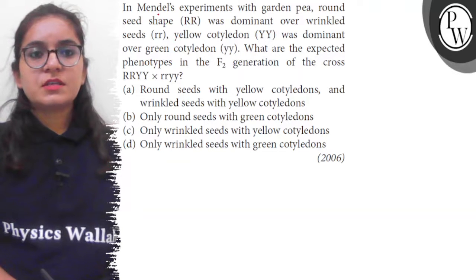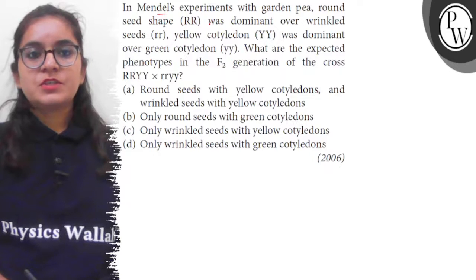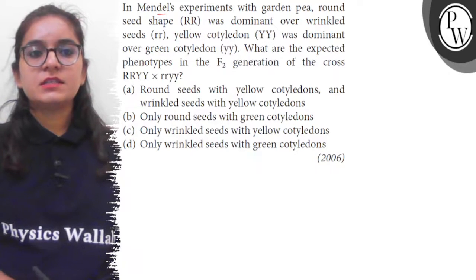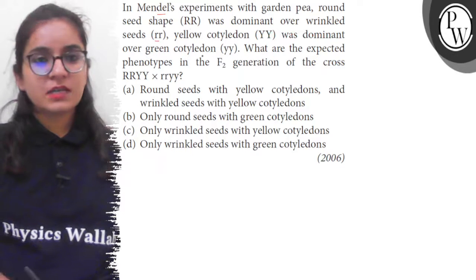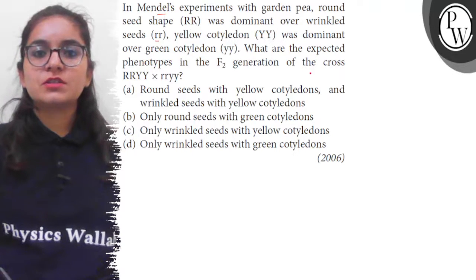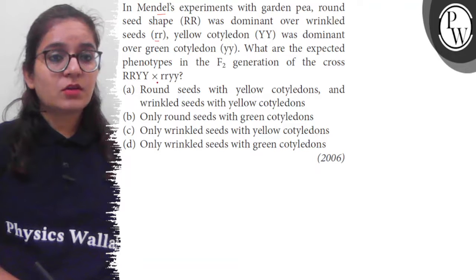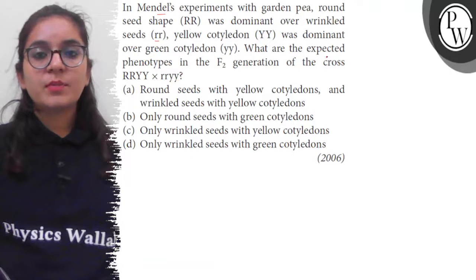Hello students, the question is: In Mendel's experiment with garden pea, round seed shape RR was dominant over wrinkled seeds rr, yellow cotyledon was dominant over green cotyledon. What are the expected phenotypes in F2 generation of cross RRYY crosses with rr yy?